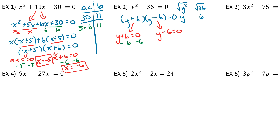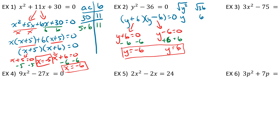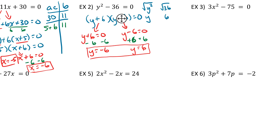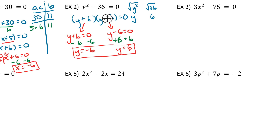For the first equation, subtract 6 from both sides and get y equals negative 6. For the second, add 6 to both sides and get y equals positive 6. Those are our two solutions. Alright, for the third one, we're again going to use the difference of squares.